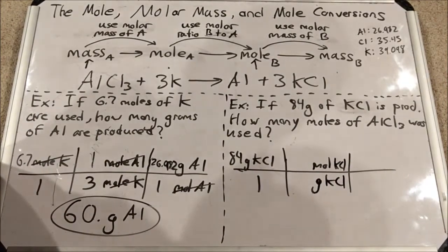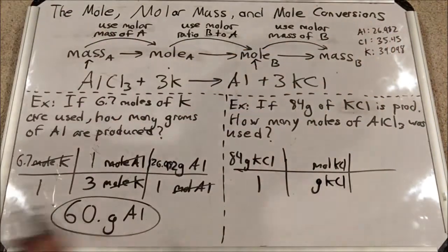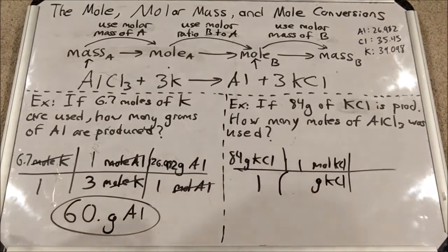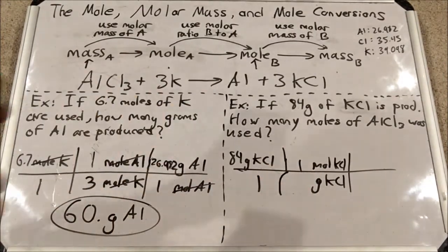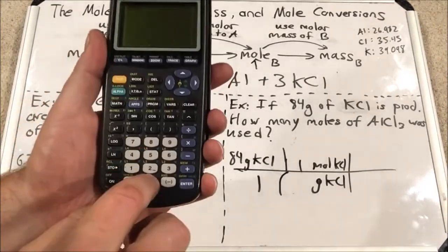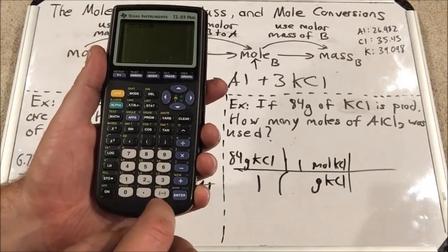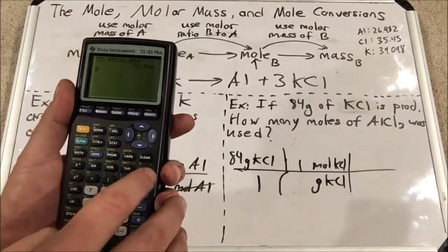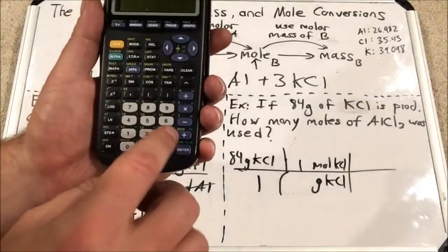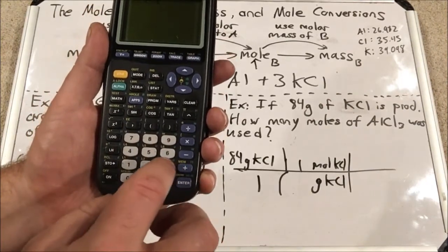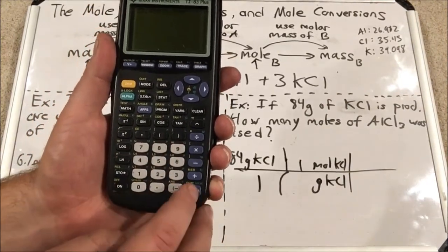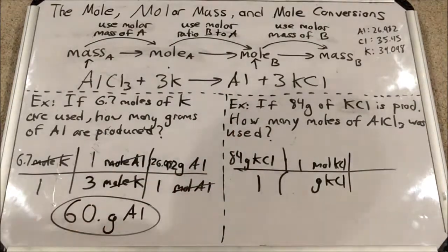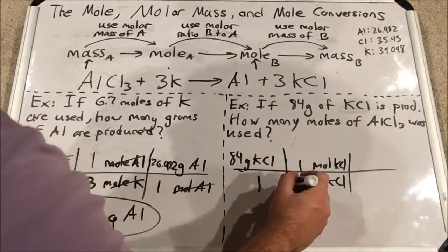KCl is a compound, so I add one potassium and one chlorine together: 39.098 plus 35.45 gives 74.548 grams per mole. No rounding in the middle. So 74.548 goes on bottom as the molar mass of KCl.